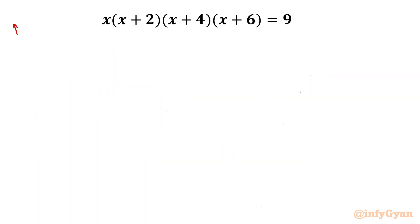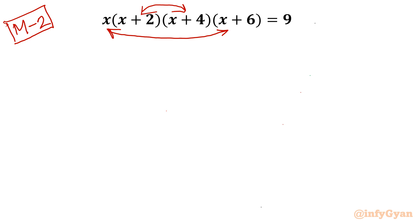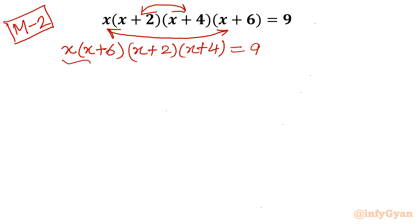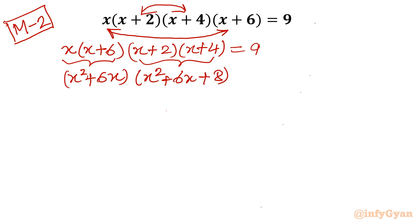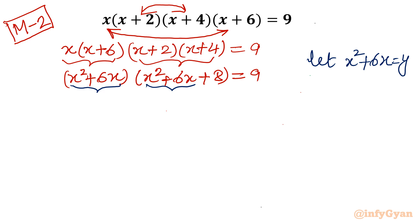Method number 2. In this method I will take the product of the outer two brackets and the inner two brackets and then substitute. I rewrite the equation as x(x plus 6) times (x plus 2)(x plus 4) equal to 9. Taking those products gives (x² plus 6x)(x² plus 6x plus 8) equal to 9. The obvious substitution is y equals x² plus 6x, giving y(y plus 8) equal to 9.